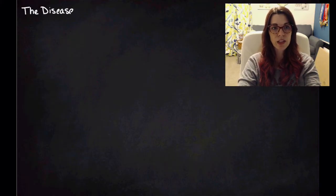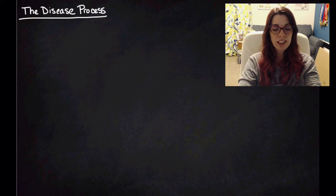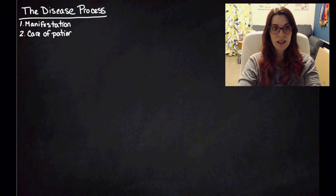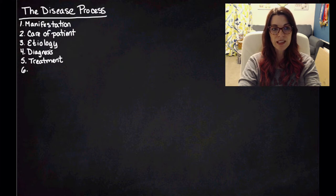Hi, this is Ms. Delosier and these are your notes on the disease process. So the disease process is made up of a series of steps and we're always going to look at these steps. The first of the steps is the manifestation of the disease and then the care of the patient, followed by the etiology, and then diagnosis, treatment of the disease, and then prognosis.